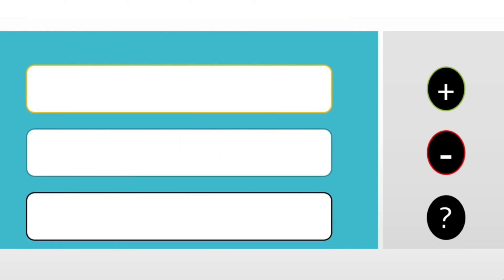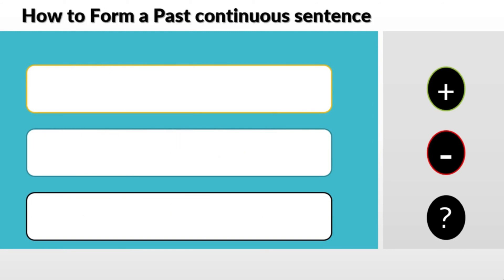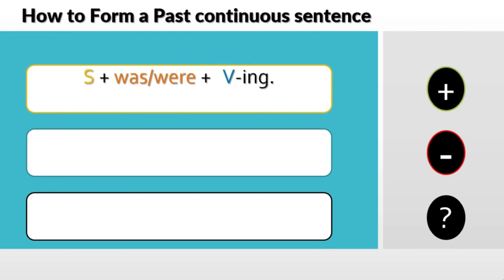How do we form the past continuous sentence? In the affirmative it would be subject plus 'was' or 'were' — depending on the subject — plus the verb with the suffix -ING. For example: 'He was walking' — we use 'was' because of 'he.'